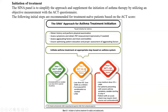Step two is for partially controlled asthma, and we have many options. The first option is low-dose inhaled corticosteroids. Alternatives include starting formoterol with inhaled corticosteroids combination, just like in step one. In step two we can also give LTRA, which stands for leukotriene receptor antagonist.